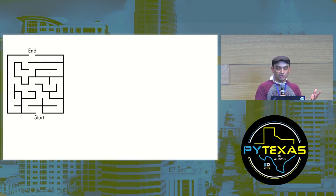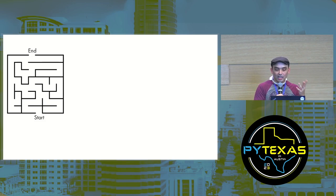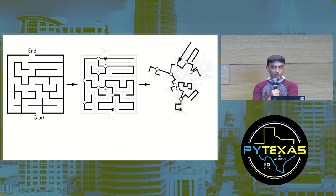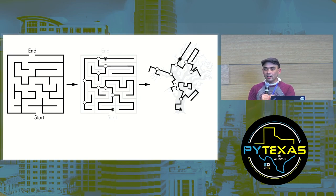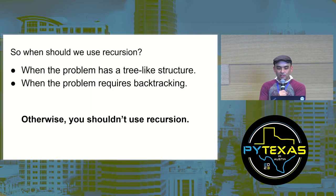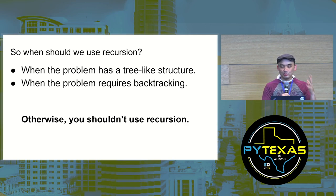Lots of things can be mapped onto trees and solved with recursion. For example, a maze can be solved with recursion because a maze is really a tree data structure — the entrance is the root node, every intersection branches to multiple nodes, and the exit is one of those nodes. If you backtrack from the exit to the entrance, that's the solution. It's actually simpler to implement this as a recursive function than with a loop and a stack.